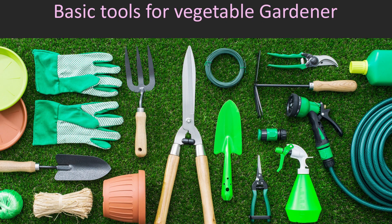Basic tools in vegetable gardening: a garden trowel is perfect for digging small holes, transplanting seedlings, and loosening soil in the raised bed. Hand pruners or secateurs are essential for cutting and trimming plants and are good for harvesting vegetables and removing dead or diseased plant parts. Garden gloves protect your skin from thorns, sharp edges, and soil-borne pathogens. A garden fork is useful for turning and aerating the soil, helping loosen compacted soil, improving drainage, and allowing plant roots to grow freely.